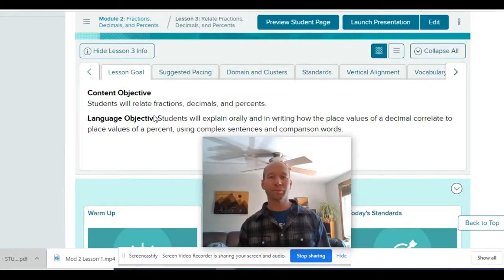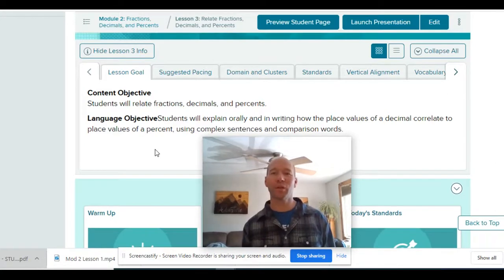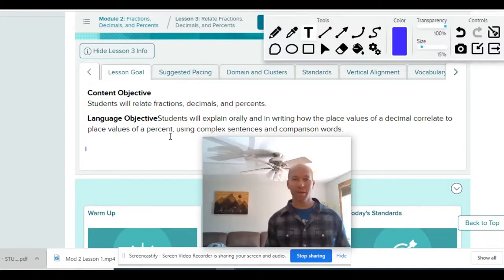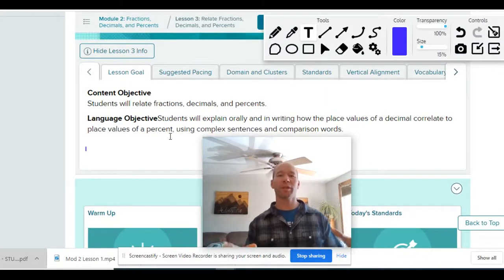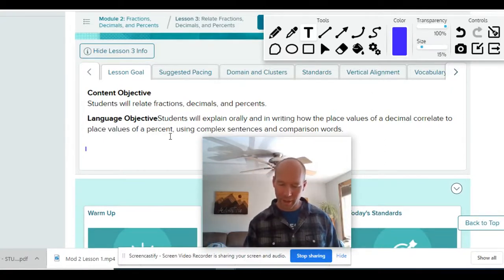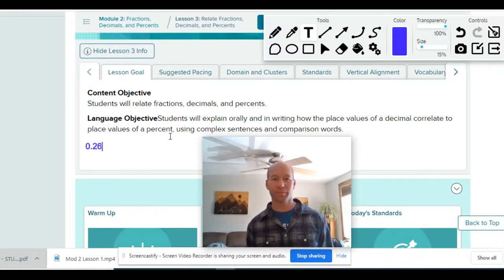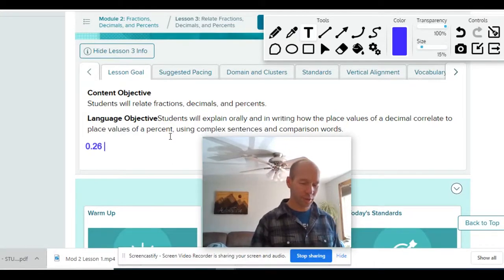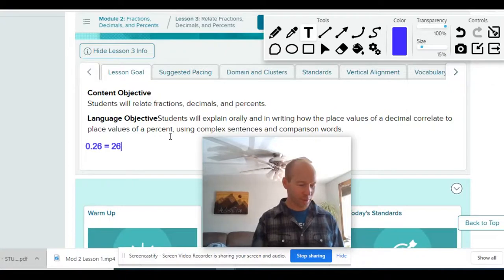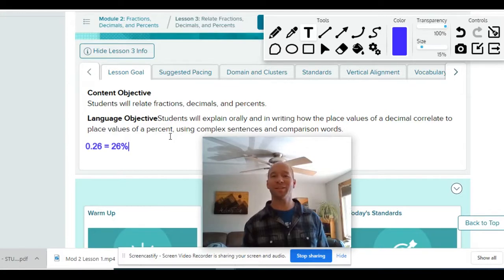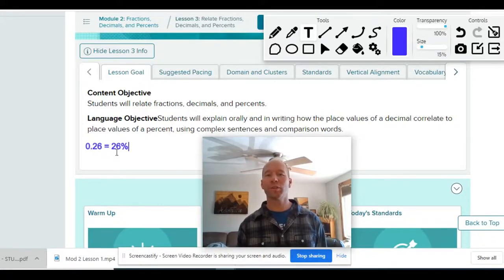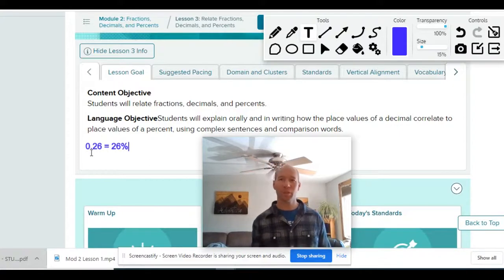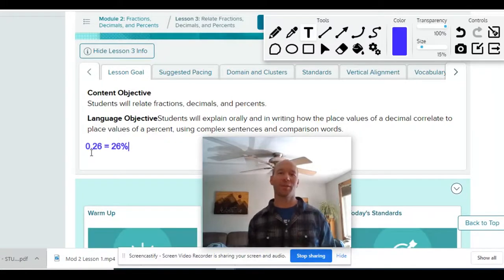So you can now relate fractions, decimals, and percents. What does it mean to explain orally and in writing how the place value of a decimal correlates to the place value of a percent? So how does place value connect? What have you noticed as we've been working on this? Let's use a decimal and a percent. So if I had 0.26, what does that equal in percentage? Yeah, that equals 26%. What have you noticed about the place value? Yeah, that decimal moved over two places. So the decimal always moves over two places to the right to be a percent. Or if you have a percent, it moves two places to the left to be a decimal. So those decimals and those percents are always connected right there together.